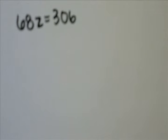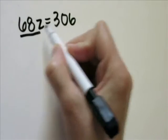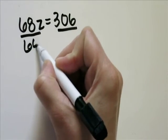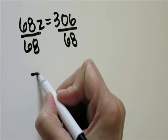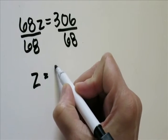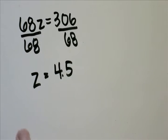Problem number 18, 68z equals 306. This is very easy. You're just going to divide each side by 68. And 306 divided by 68 will give you 4.5. So z equals 4.5.